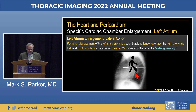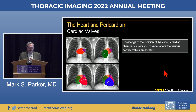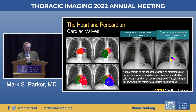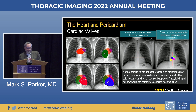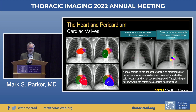Notice how the upper posterior border of the myocardium is enlarged from the left atrial disease on the lateral view. Knowledge of the location of the various cardiac chambers allows you to know where the cardiac valves are located. The normal cardiac valves are not visible on your radiograph, but may become visible when diseased—manifest by calcifications—or when iatrogenically replaced.